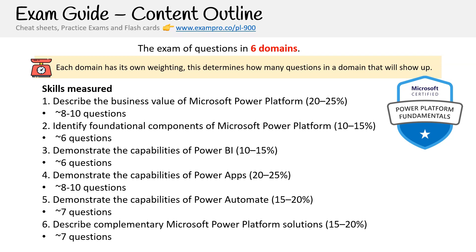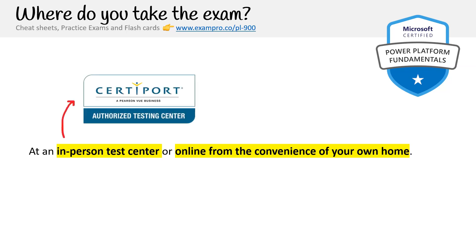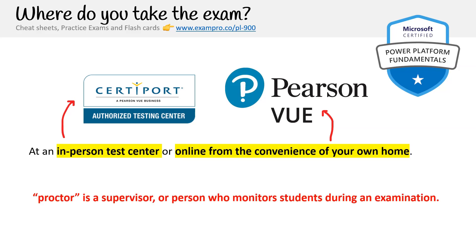Overall, the exam is mostly well balanced and evenly distributed across all six domains, so you won't be faced with an excessive amount of questions from a particular domain that may not be your strong suit. You can take the exam at an in-person test center or online from the convenience of your own home. Microsoft is partnered with the test center network Pearson VUE, and it offers in-person or online proctored exams, meaning there is somebody watching you to ensure that you are not cheating.